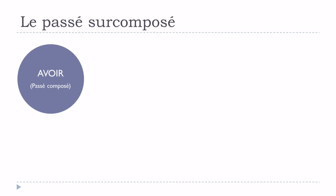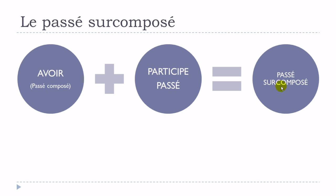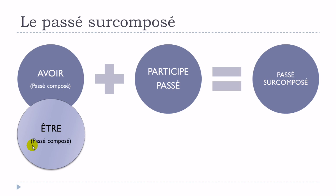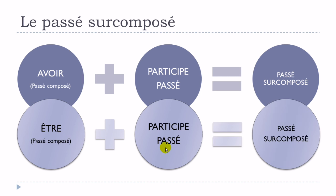To summarize how to construct the passé surcomposé: in almost all cases, use avoir at the passé composé, then add your participe passé — and you get the passé surcomposé. In some cases, use être at the passé composé instead, then add your participe passé. It is quite rare nowadays, but now that you know how it works, if you read or hear a passé surcomposé, you'll recognize it.